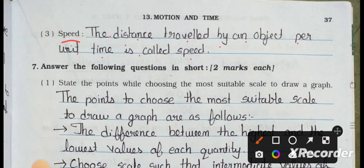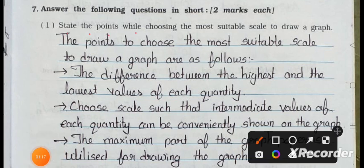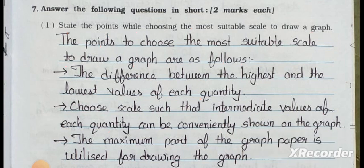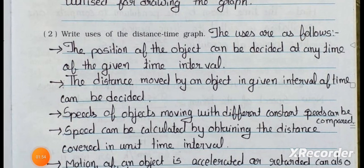Now see Main 7 — Answer the following questions in short, two marks each. Question number one: State the points while choosing the most suitable scale to draw a graph. Answer — The points are as follows: consider the difference between the highest and the lowest values of each quantity; choose a scale such that intermediate values can be conveniently shown on the graph; and the maximum part of the graph paper is utilized for drawing the graph.